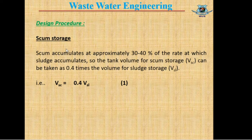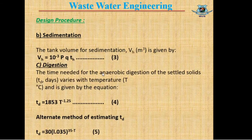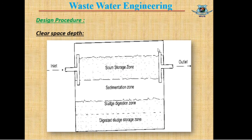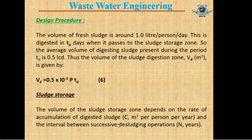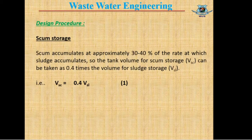The first design item is scum storage. Scum is the lightweight particles that accumulate at the top of the septic tank. Scum accumulates at 30 to 40 percent of the rate that sludge accumulates — that is, scum volume will be 30 to 40 percent of sludge volume. We take the maximum value of 40%, so the volume of scum VSC equals 0.4 × VSL (volume of sludge).